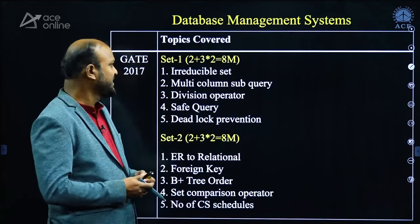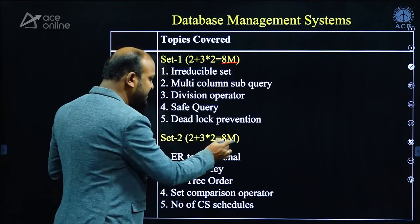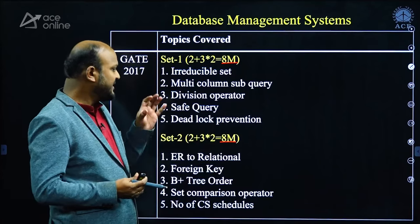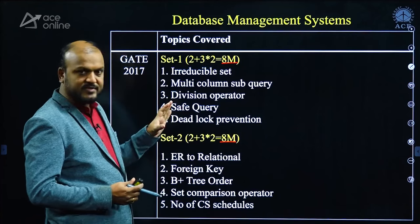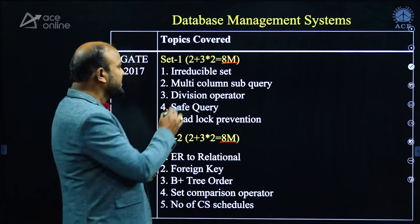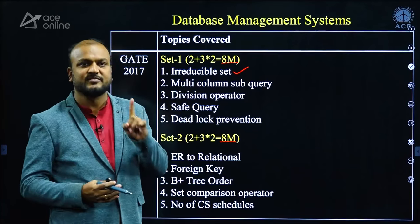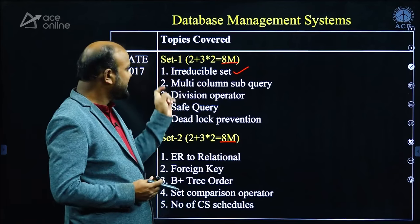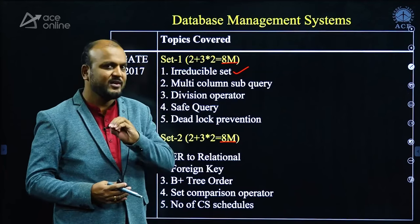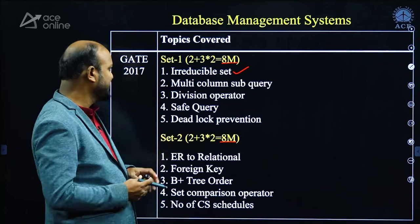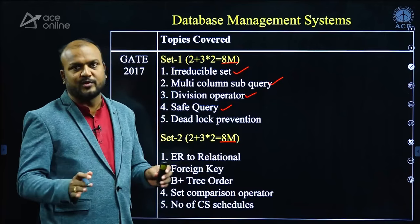Next, Database Management Systems. In 2017, 8 marks were asked from DBMS in both Set 1 and Set 2, from five different topics. Looking at previous papers, the irreducible set — also called the minimal set of functional dependencies — was asked for the first time in 2017; no questions on this topic had been asked before 2017. Multi-column subqueries, division operator, and safe query were also new topics introduced in 2017.